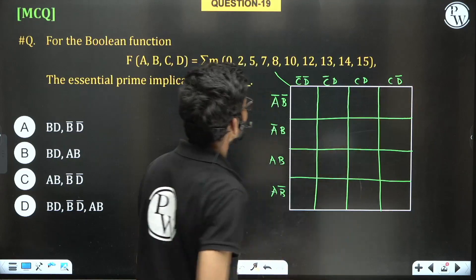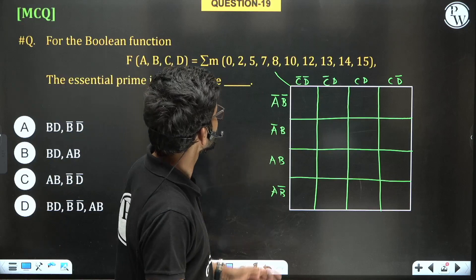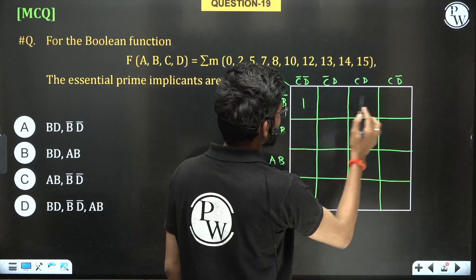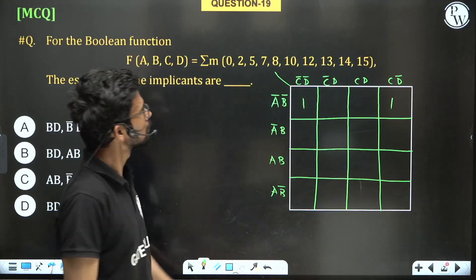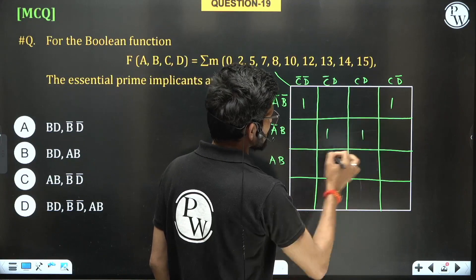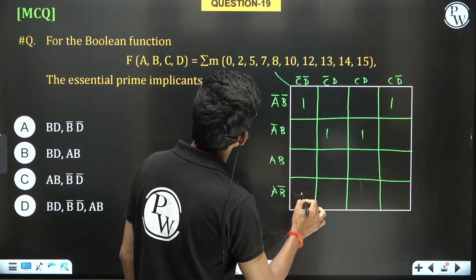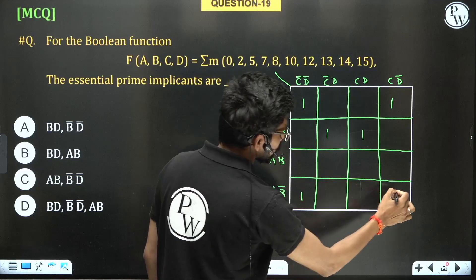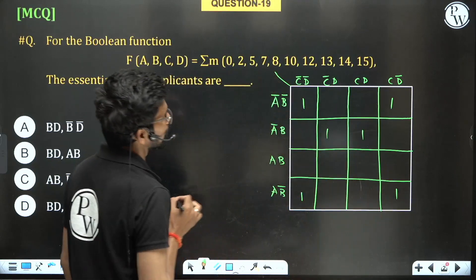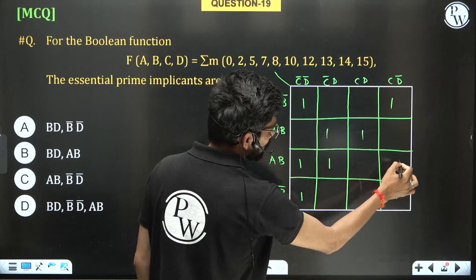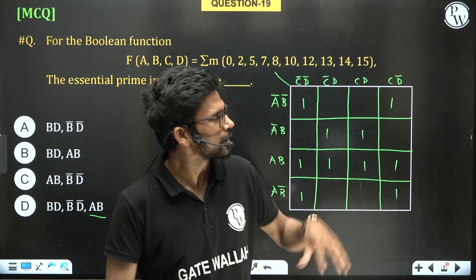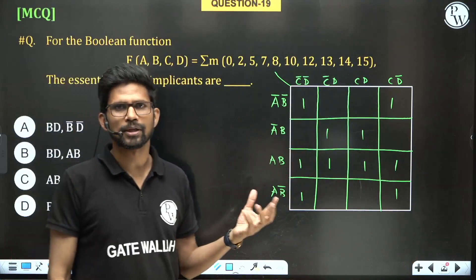Let us fill in the terms given in the Boolean expression. For min-term 0, the output is 1. For min-term 2, the output is 1; 3 is missing. For min-term 5, it is 1. For 7, it is also 1. For 8, it is 1; 9 is not present. For 10, it is 1; 11 is missing. For 12, 13, 14, and 15, the output is 1. These are the terms for which the output is 1; the remaining boxes have output 0.